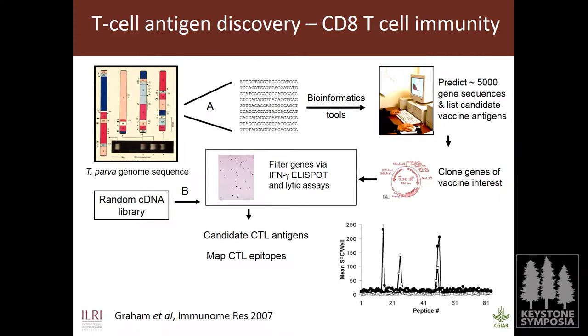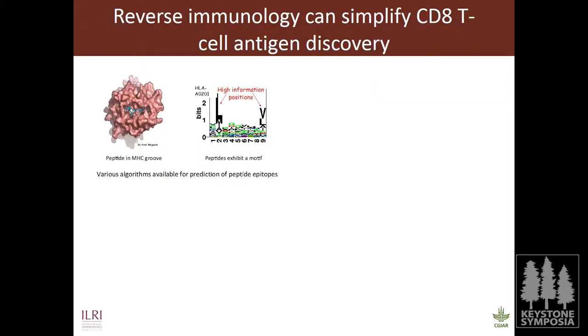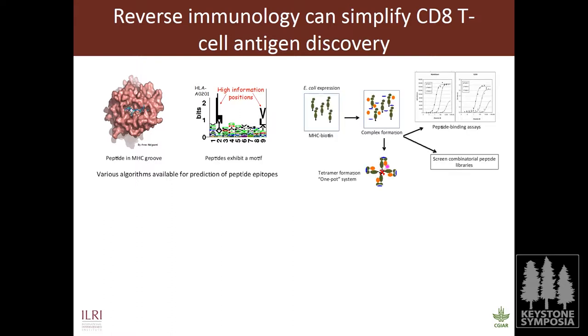The question was whether you can use reverse immunology to simplify the identification of CD8 T cell epitopes — and the answer is yes. A 3D reconstruction of the peptide in complex with MHC shows that each MHC binds a range of peptides exhibiting a specific motif. Once you identify that motif, you can develop algorithms to predict epitopes computationally. We've been working with a program called NetMHCpan and developing new immunological assays such as tetramers.